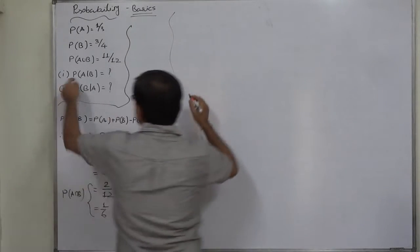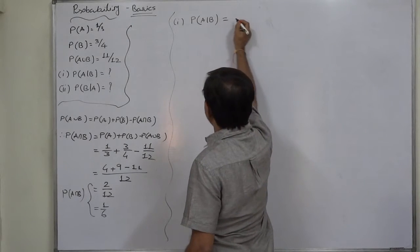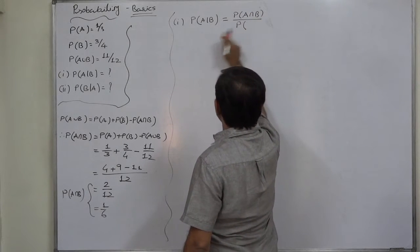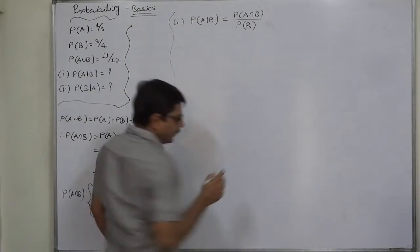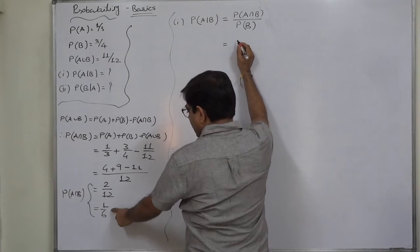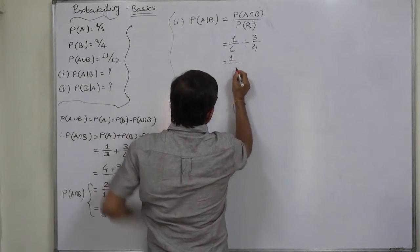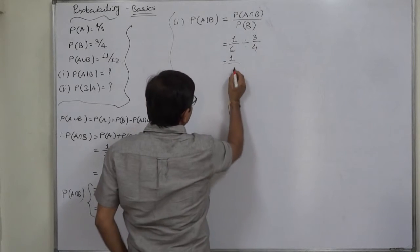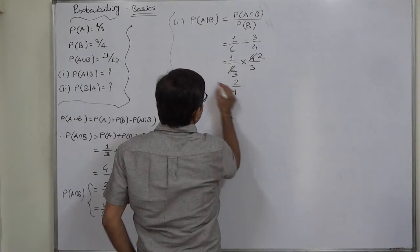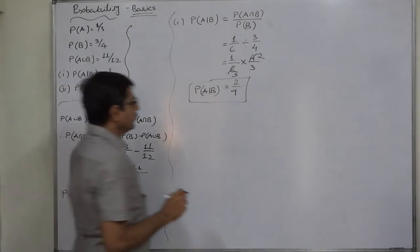Now we can calculate the two conditional probabilities. First, P(A|B) — the probability of event A happening if B has happened — equals P(A∩B) divided by P(B). That is (1/6) ÷ (3/4). Division of a fraction means multiplication by the inverse, so it is (1/6) × (4/3) = 4/18 = 2/9. Probability of A given B is 2/9.